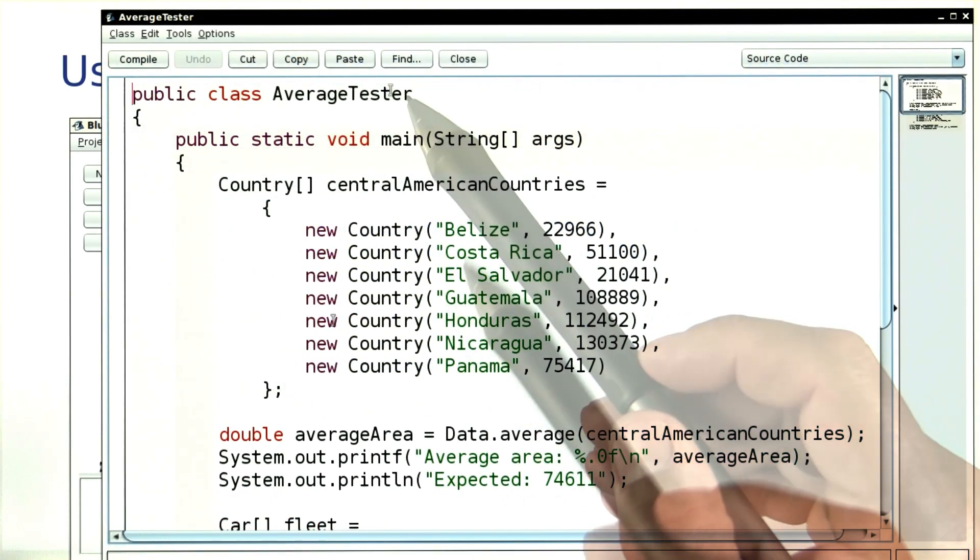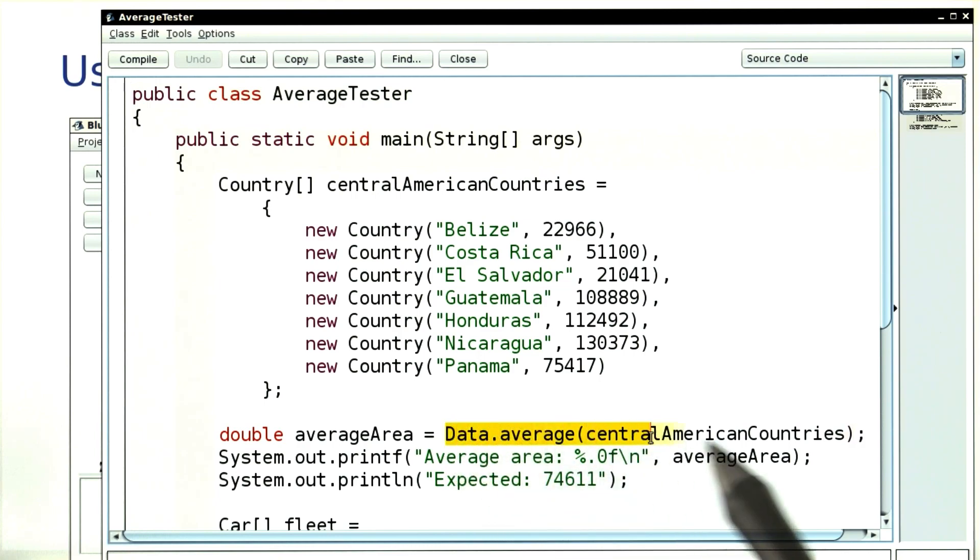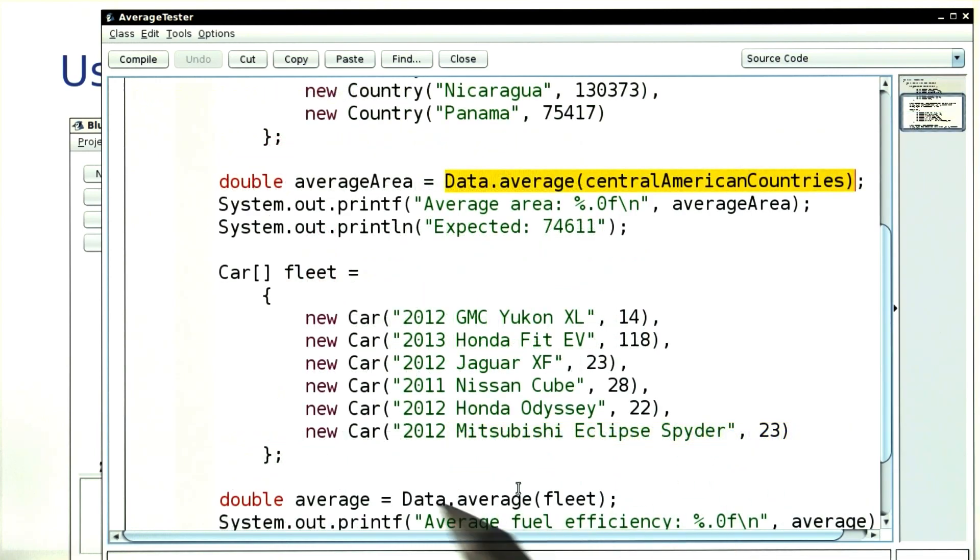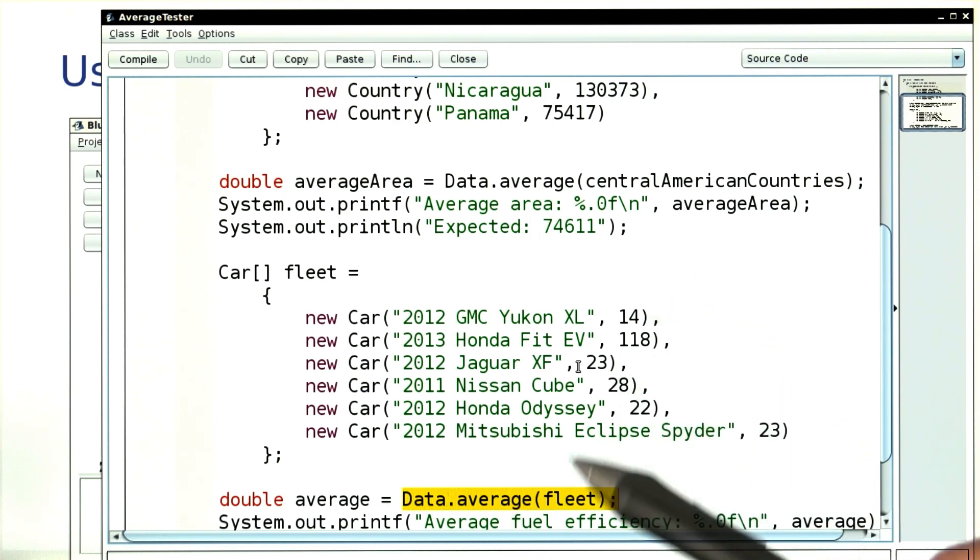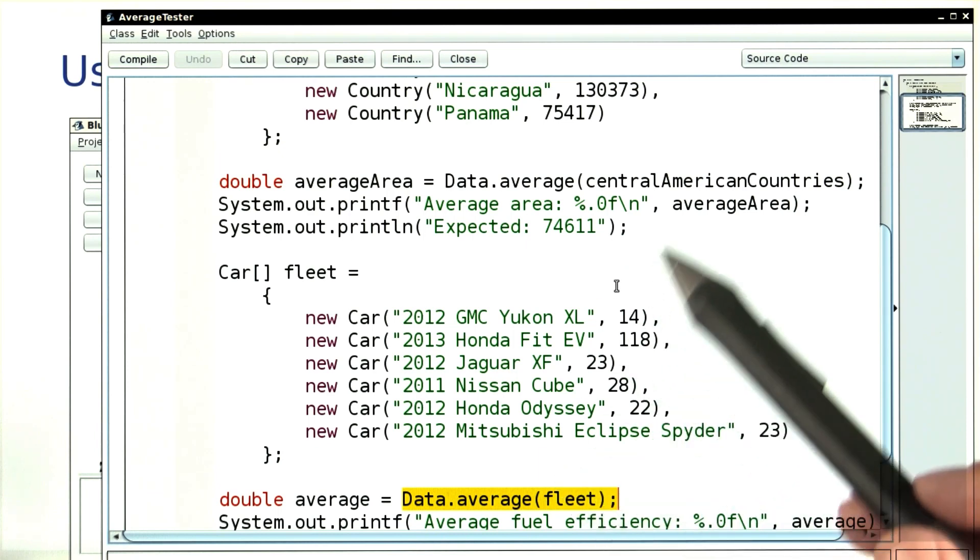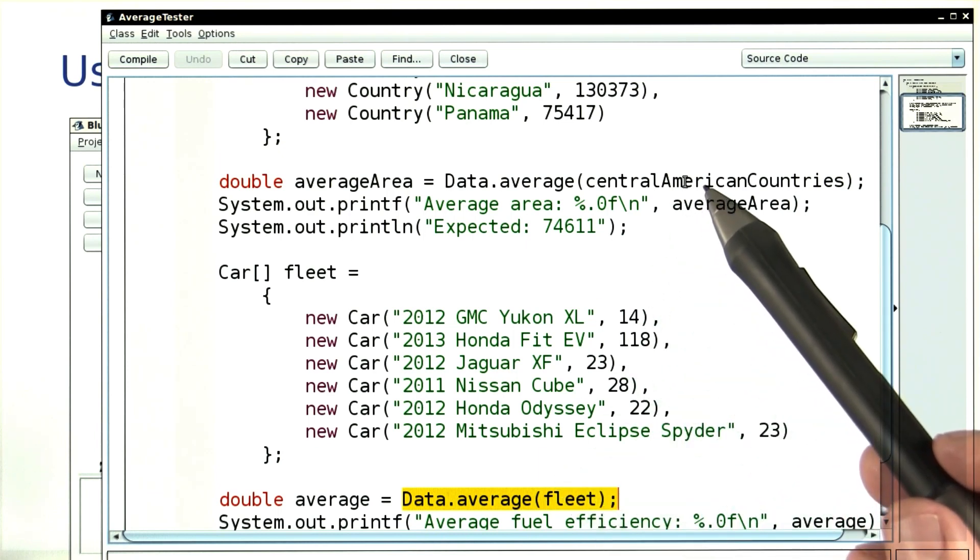In the tester, we'll call this method first on an array of countries. Then we call the same method again on an array of cars. That's what I mean with reuse. This method only has to be written once and we can call it with data sets containing objects of different classes.